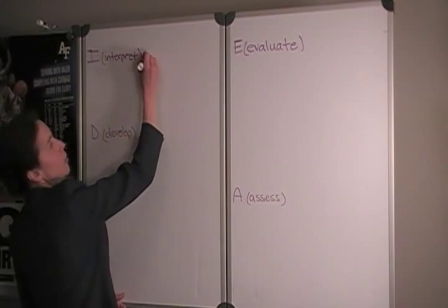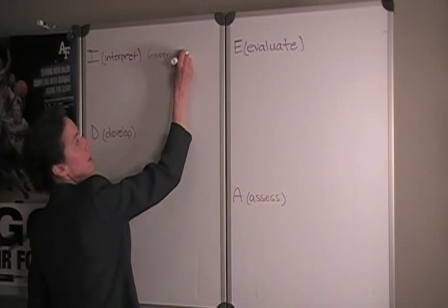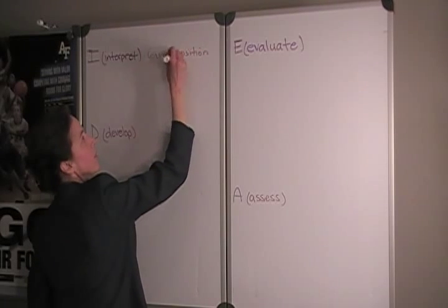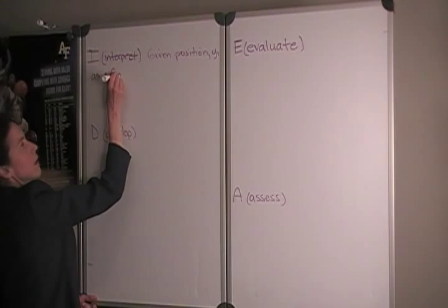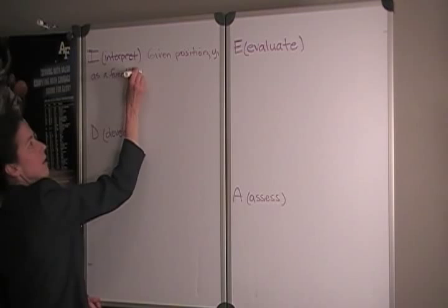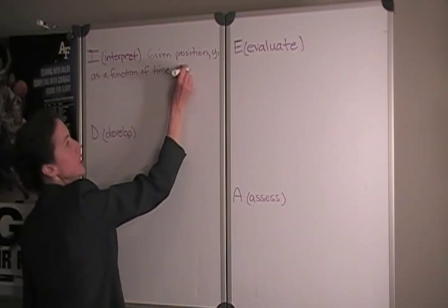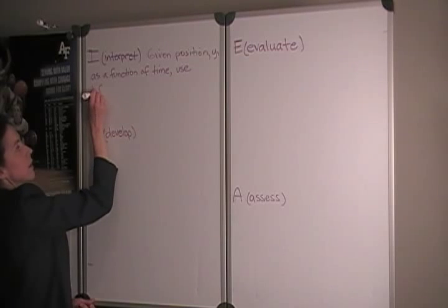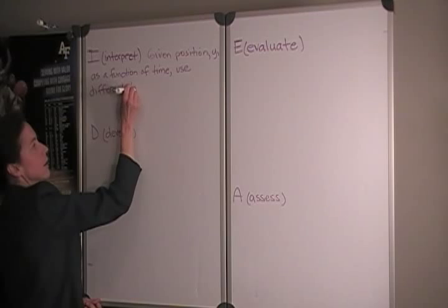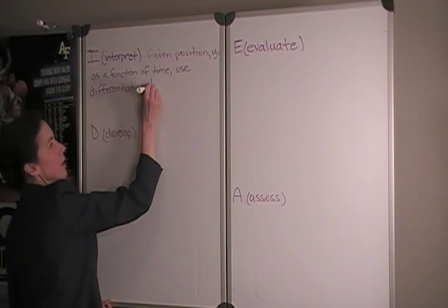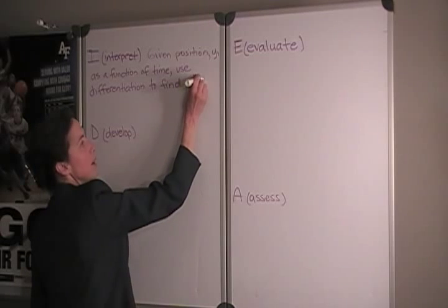As we interpret the problem, then, we can write given position y as a function of time, and what we'll do is we'll use differentiation to find an expression for the velocity as a function of time.